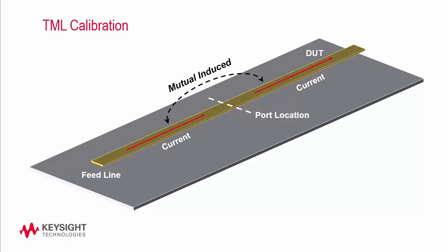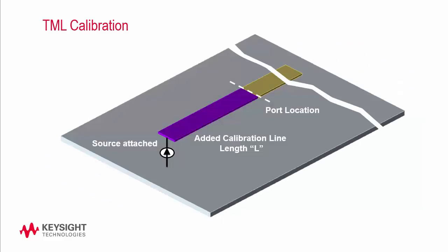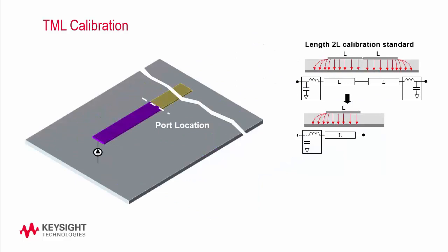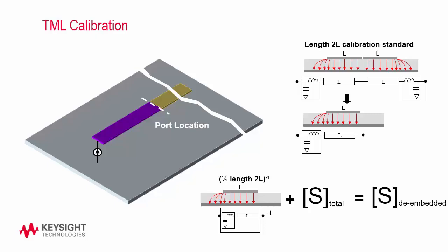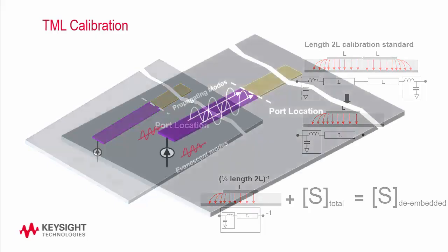A certain length L transmission line of the same characteristic is attached at the port. Typically, the length L becomes a half wavelength at high frequency applications. By attaching two length L lines to each other, we create a perfect thru calibration standard from which we are able to extract a model for the 1L calibration line. These 1L S-parameters are de-embedded from the results, which eventually remove the fringe capacitance and the added line length 1L. However, the mutual coupling from the calibration line L to the structure will not be removed from the results.